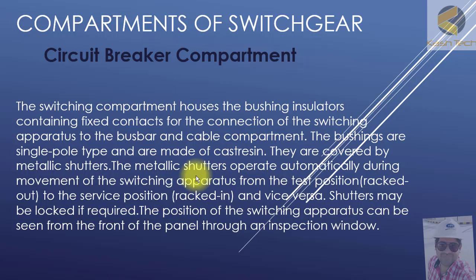Let's start our new topic: the circuit breaker compartment. The circuit breaker compartment houses the bushing insulators containing fixed contacts for the connections of switching operators to the bus bar and the cable compartment. The bushings are single-pole type and are made of cast resin. They are covered by metallic shutters, and the metallic shutters operate automatically.